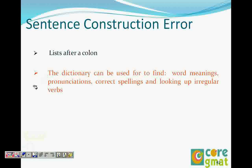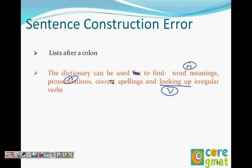The next example: 'The dictionary can be used to find word meanings, pronunciations, correct spellings, and looking up irregular verbs.' Word meanings is a noun, pronunciations is a noun, correct spellings is a noun, but 'looking up' is a verb. So you have noun, noun, noun, and then a verb — that's an error.